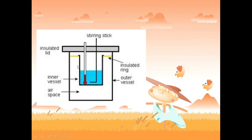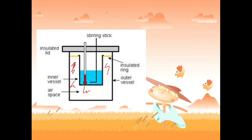The inner and outer calorimeter are separated by air space to minimize heat transfer to the surroundings, and there is an insulated lid so it does not release or absorb heat from the surroundings. In the method of mixtures, for example, you heat a metal sample to a certain temperature, place it into water inside the calorimeter, record the initial temperature of the water, and then measure the final temperature of the mixture after they reach thermal equilibrium.